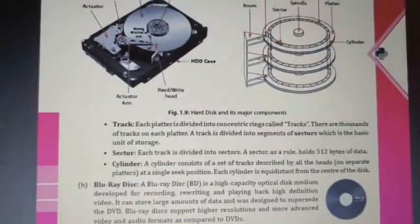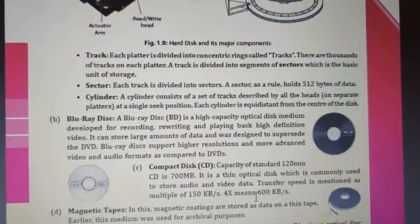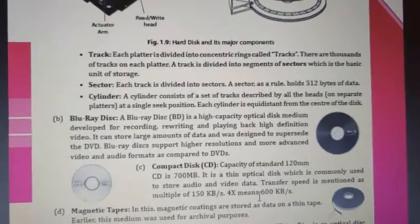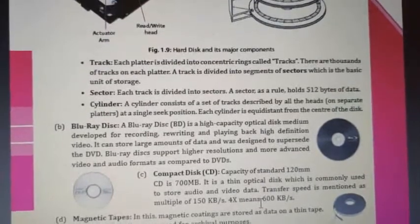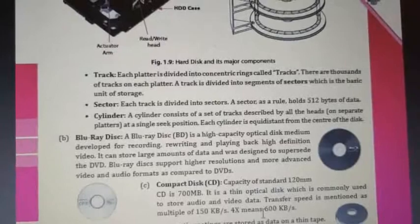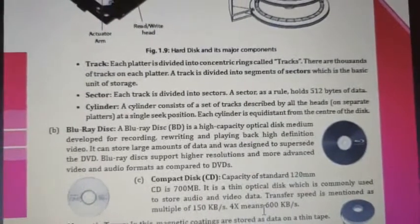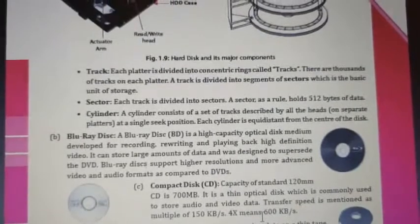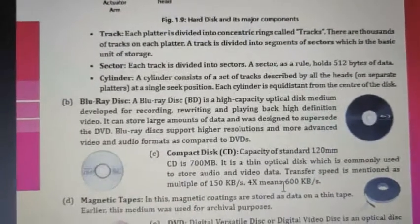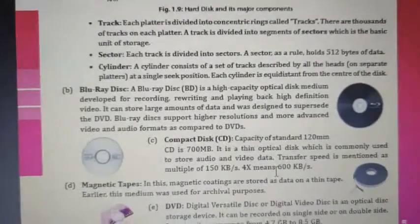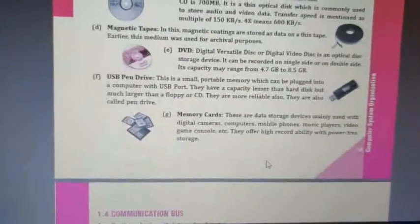Each platter is divided into concentric rings called tracks — there are hundreds of tracks on each platter. A track is divided into segments called sectors, which is the basic unit of storage; a sector holds 512 bytes of data. A cylinder consists of a set of tracks described by all heads at a single seek position, each equidistant from the center of the disk. Other secondary storage includes Blu-ray discs, compact discs, magnetic tape, USB pen drives, and memory cards.